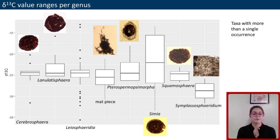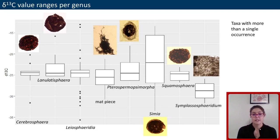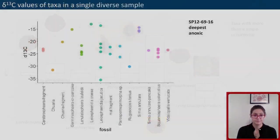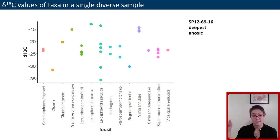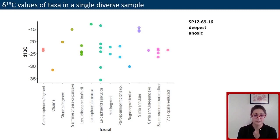Leiosphaeridia likely inhabited different parts of the water column where they could have incorporated carbon of different values, or the death assemblage records some short-term temporal change. Some distinct Tonian eukaryotes, like brainy Cerebrosphaera, or squamous Squamosphaera, or hairy Linolatosphaera, have a narrower range within taxa. Zooming into a single horizon, one of the samples with the broadest range of values is deep-water anoxic. Different taxa have different values and are offset from the bulk, with the broadest range again in Leiosphaeridia.